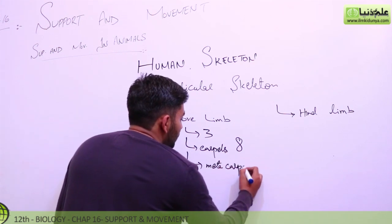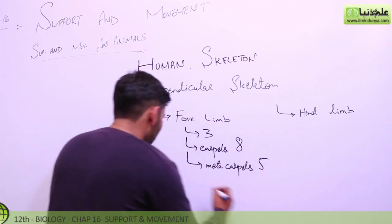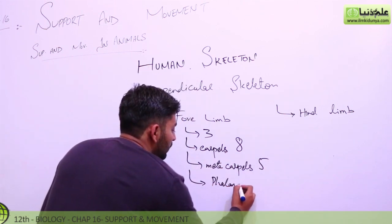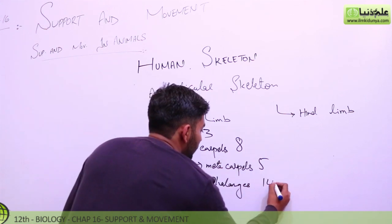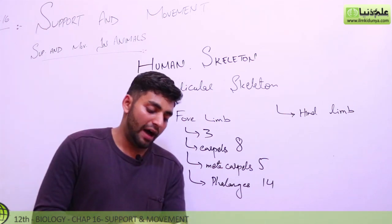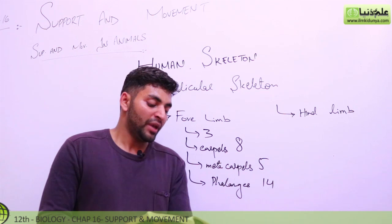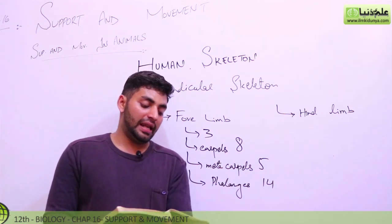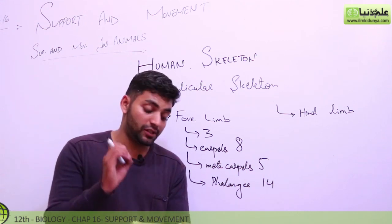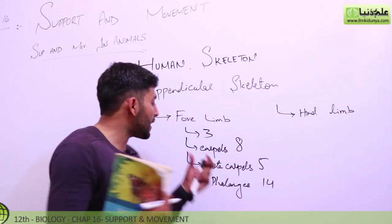Then metacarpals — we have five metacarpals. And phalanges — we have fourteen phalanges. Humerus forms a ball and socket joint with scapula, while the distal end of humerus forms a hinge joint with radius and ulna. The distal end forms a multi-stage joint with eight wrist bones called carpals.